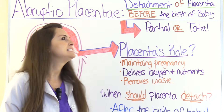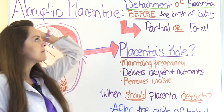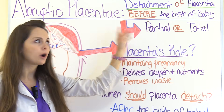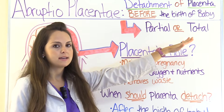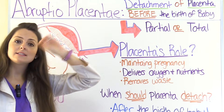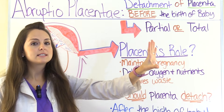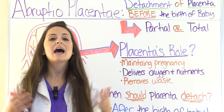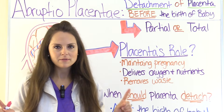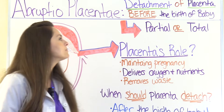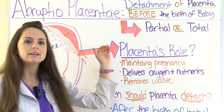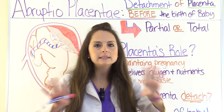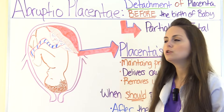Abruptio placenta is where you have detachment of the placenta before the birth of the baby. In placenta previa, which we'll talk about in the next lecture, we have an attachment issue — so remember that to help you differentiate between the two. This detachment can either be partial or total, where it completely comes off the uterine wall.